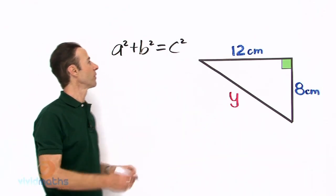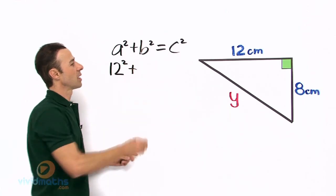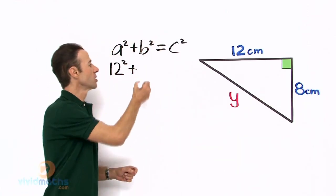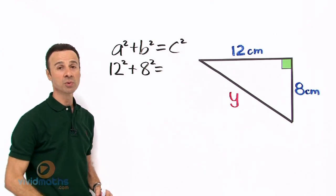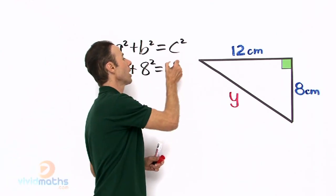So we have the 12 here, so that becomes 12 squared, plus we have the 8 here, so that is 8 squared, and that equals the missing pronumeral which is simply y squared.